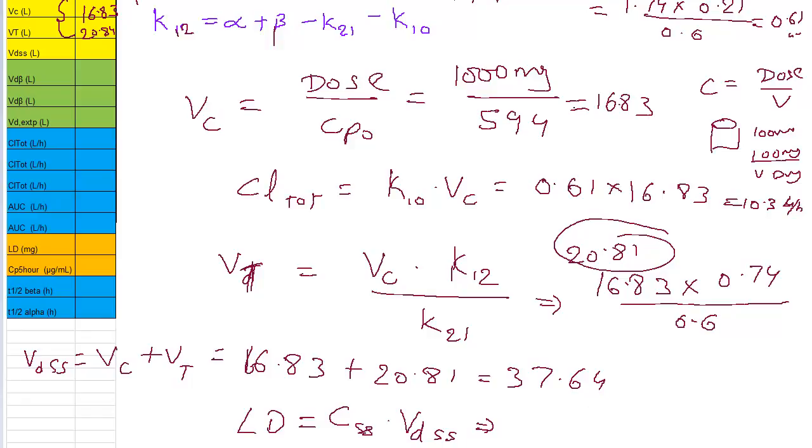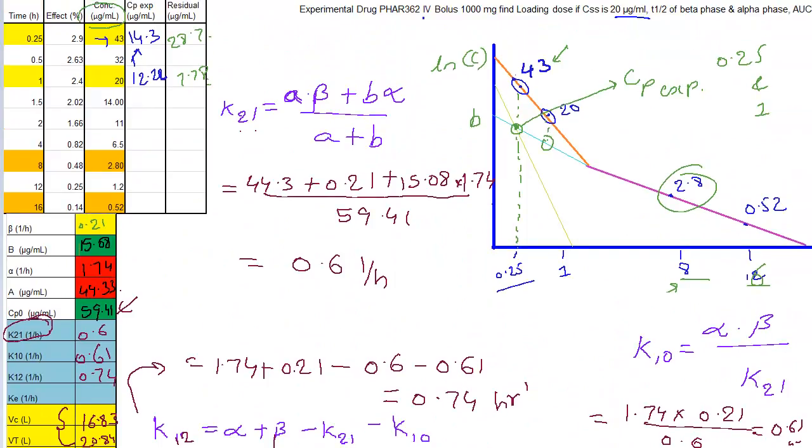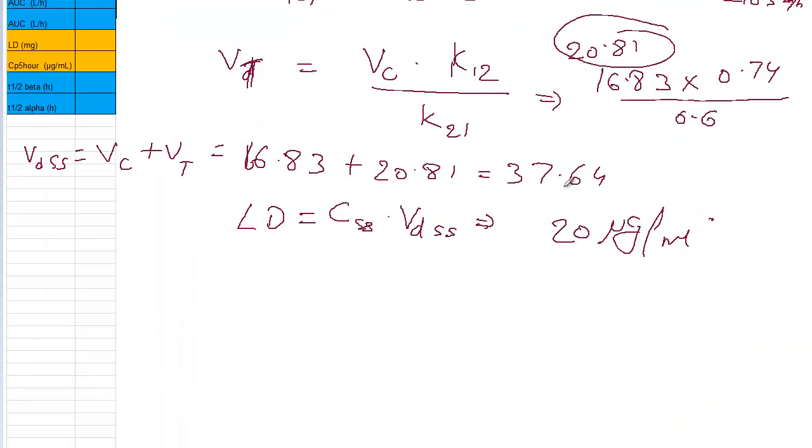Loading dose is equal to concentration at steady state times volume of distribution at steady state. So, concentration at steady state, how much? The hypothetical value which I gave is 20 microgram per ml times VdSS is how much? 37.64. If you solve for this one, you'll get a value of 752 milligrams. Let's solve some more problems.